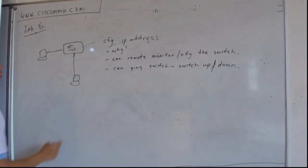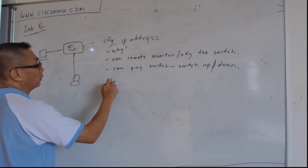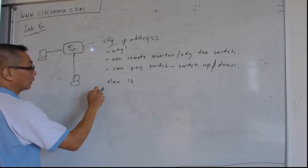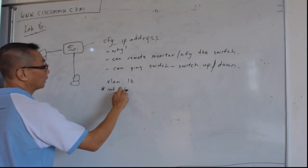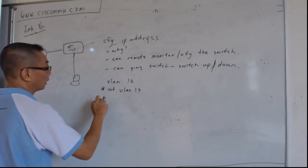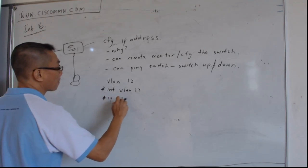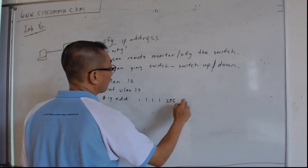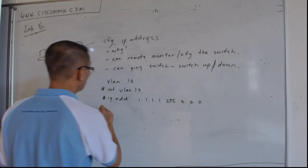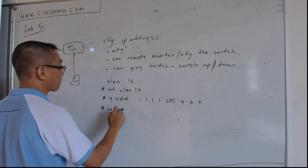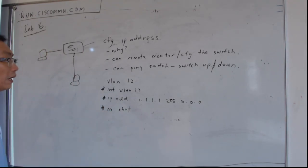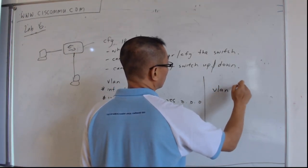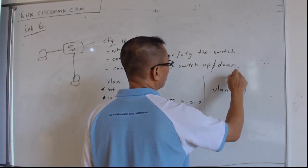Okay, so to configure it, first you create a VLAN, let's say VLAN 10. Then you put interface VLAN 10, IP address, let's say 1.1.1.1 255.255.255.0 and no shut.